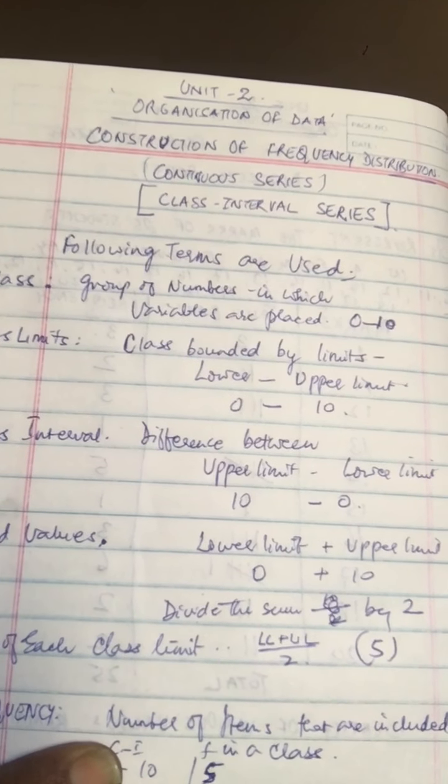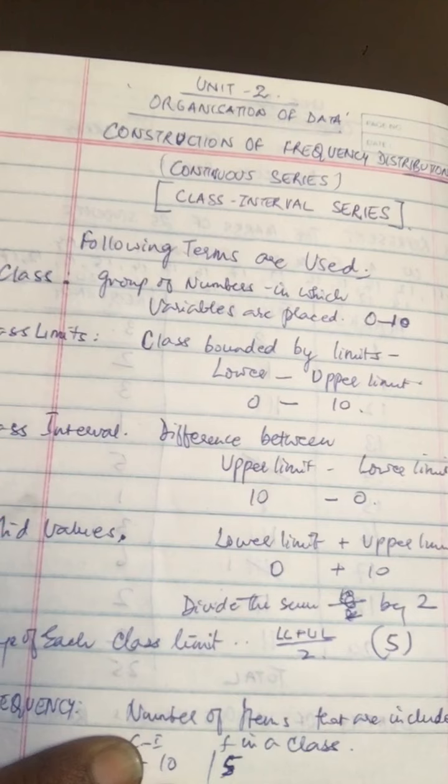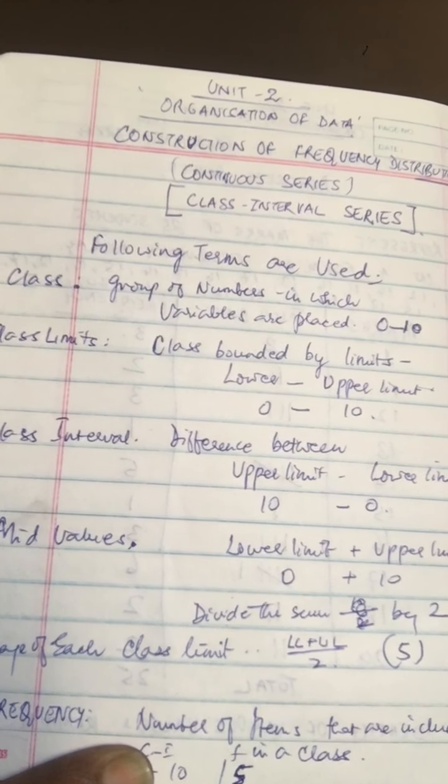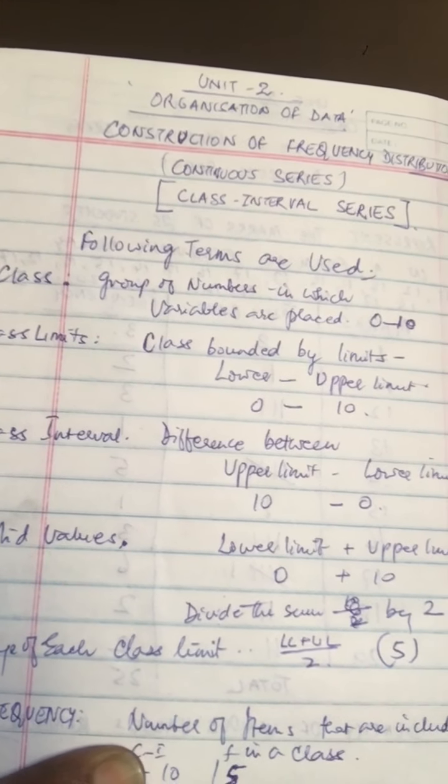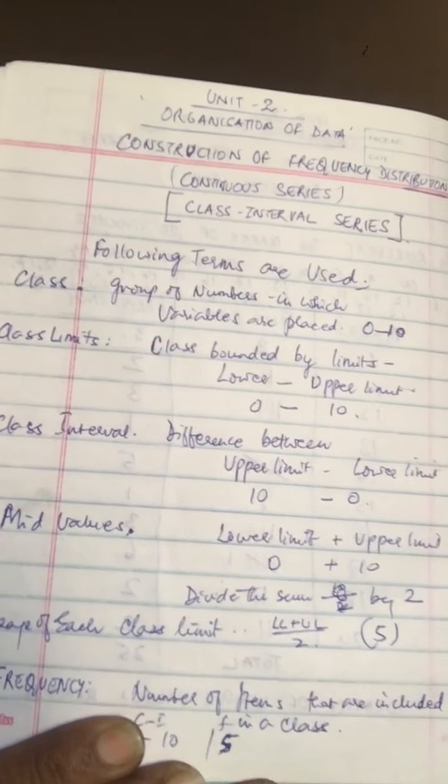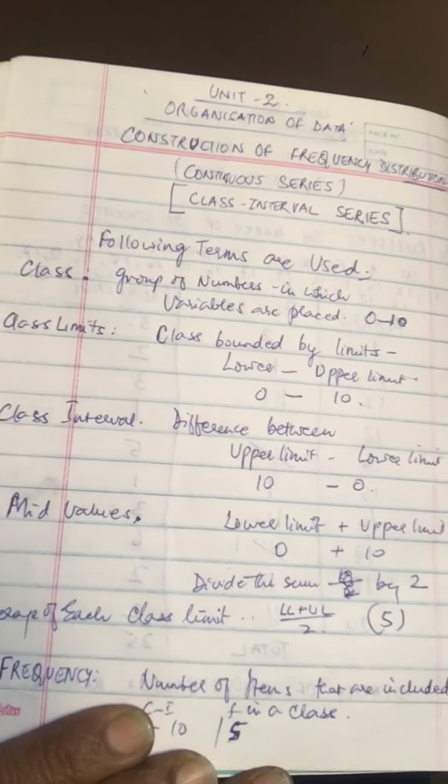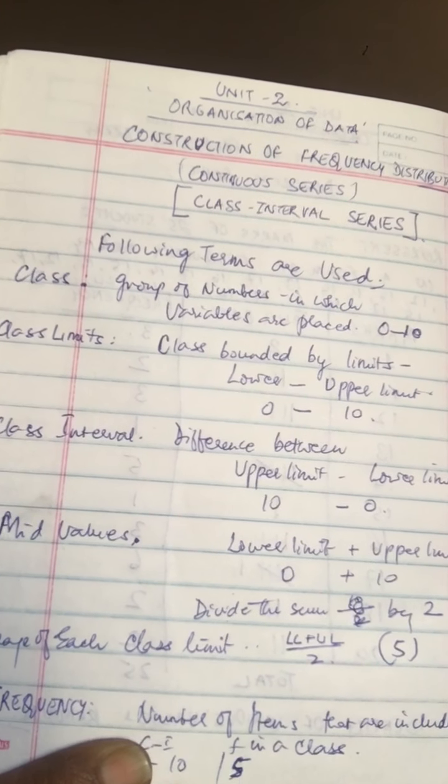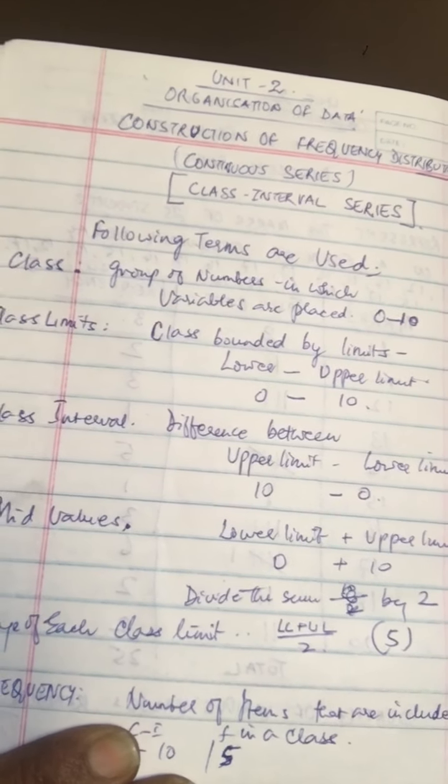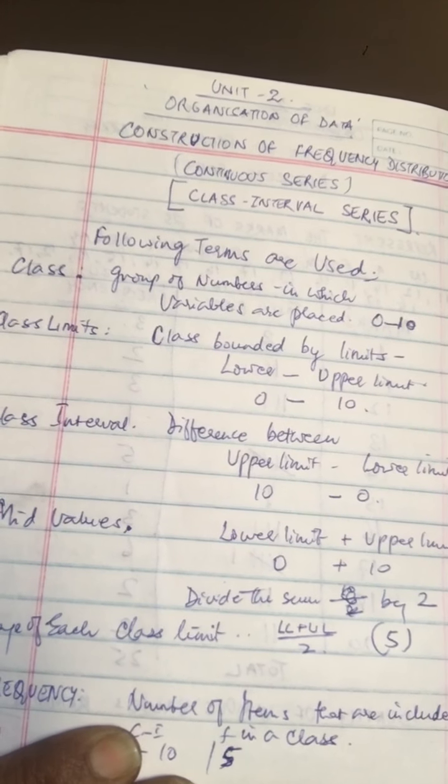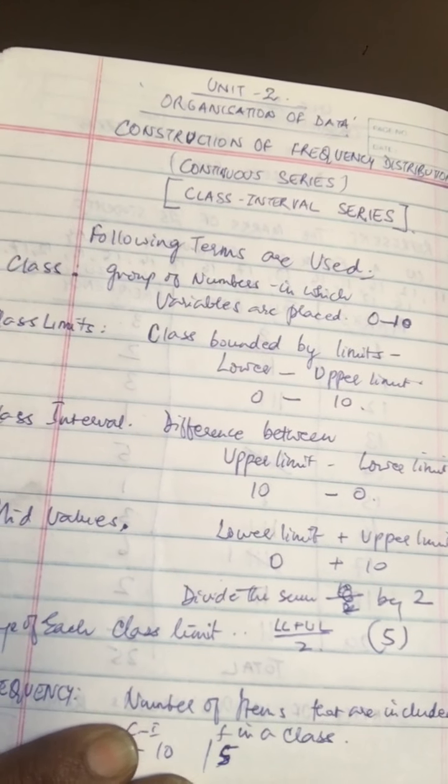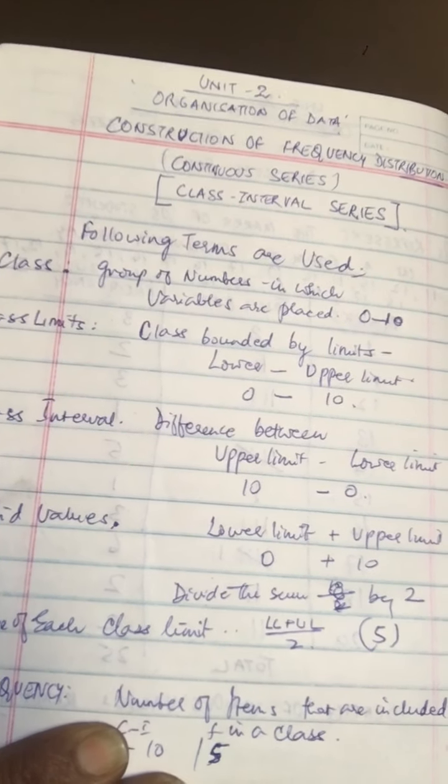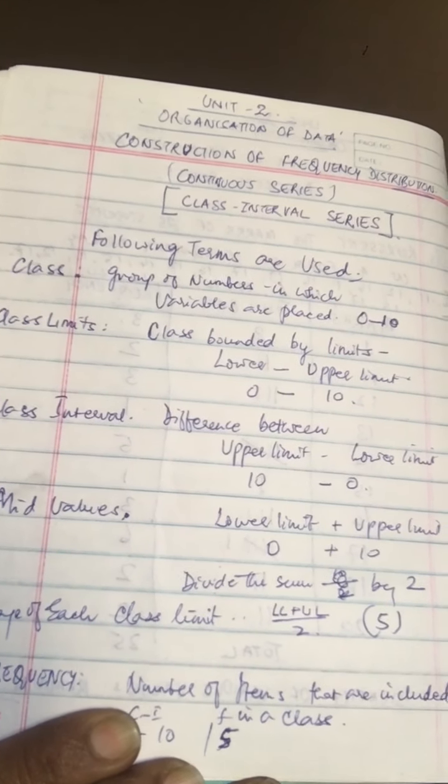Then we talk about class interval. Now what is a class interval? The difference between the upper limit and the lower limit of a class is known as a class interval. For example, if you've taken the class interval 0 to 10, so what do we do? 10, that is the upper limit minus the lower limit, you get what is the difference is 10. So that is a class interval.